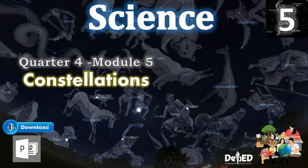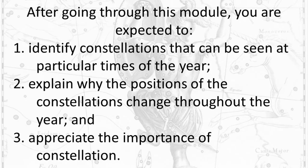Science Grade 5, Quarter 4, Module 5: Constellations. After going through this module, you are expected to: 1. Identify constellations that can be seen at particular times of the year. 2. Explain why the positions of the constellations change throughout the year. And 3. Appreciate the importance of constellations.